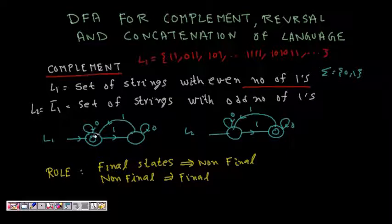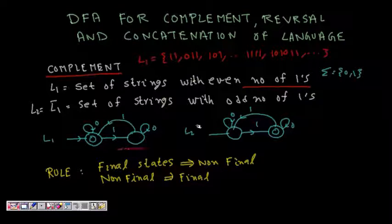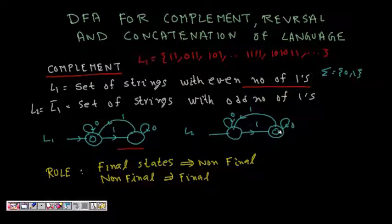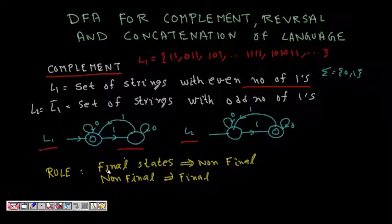Let's make the automaton for even number of ones. With Sigma = {0, 1}, getting a zero doesn't change the count of ones. With one '1' we are in a non-accept state; two ones puts us back in the accept state; three ones is non-accept; four ones is accept, and so on. For odd number of ones the accept states are simply swapped — one '1' is accepted, two ones is not, three ones is accepted, and so on. These two DFAs are complements of each other.